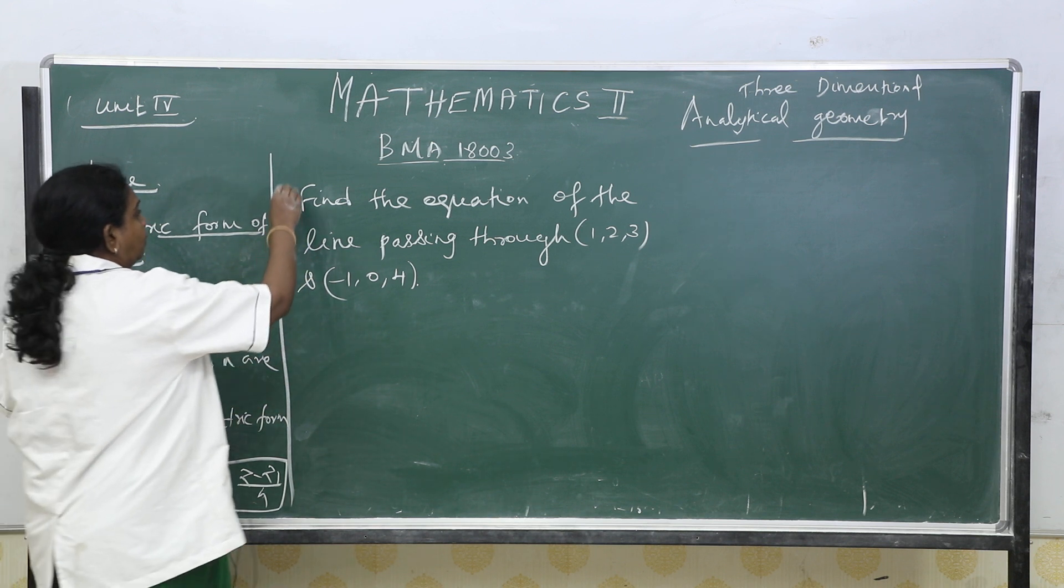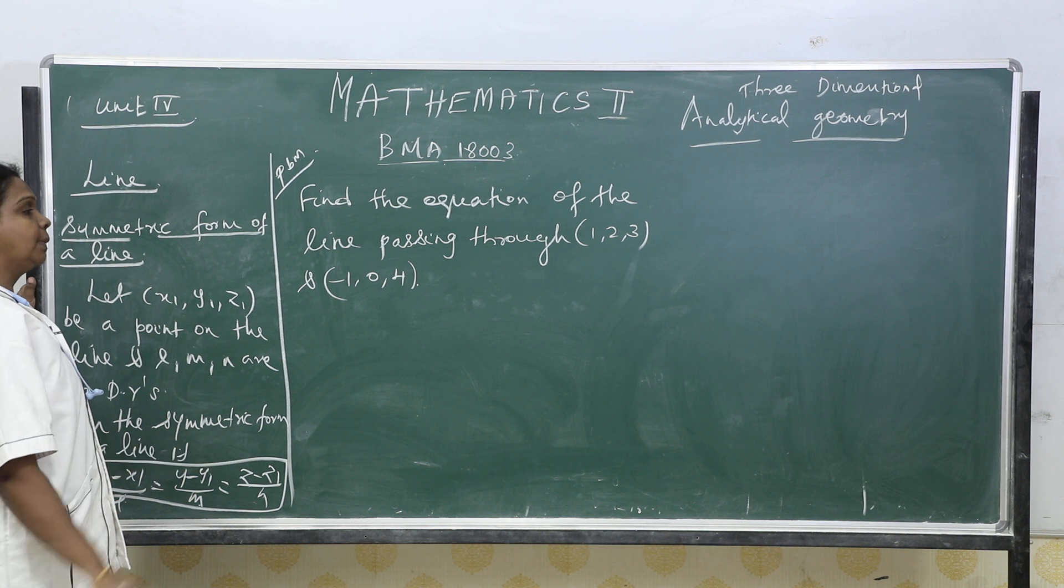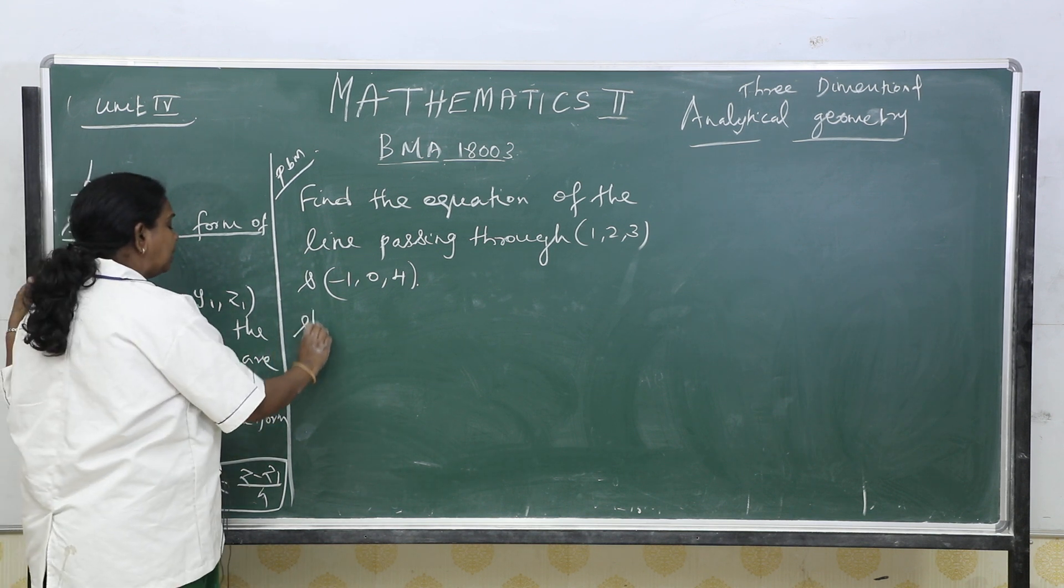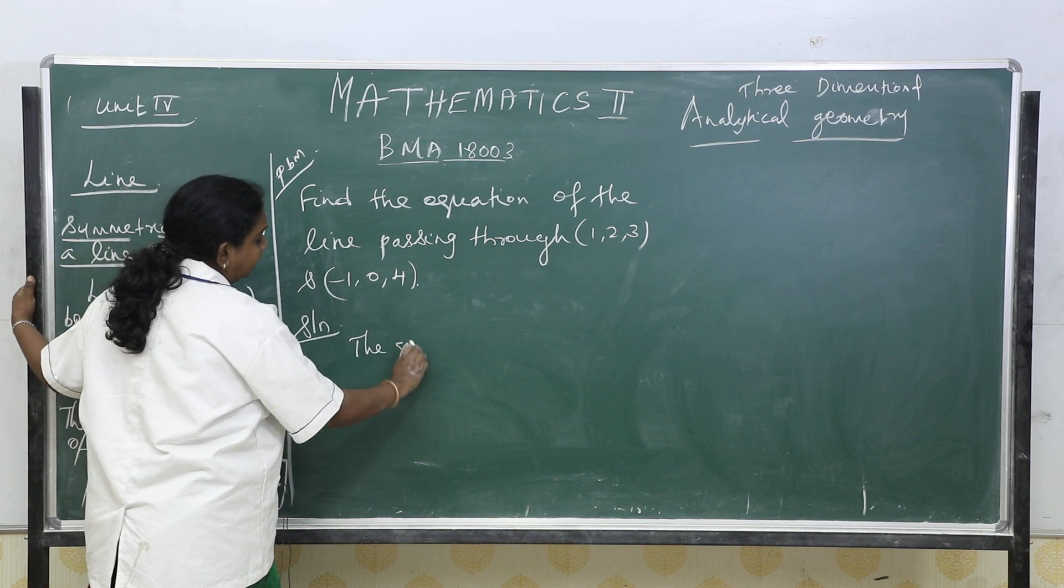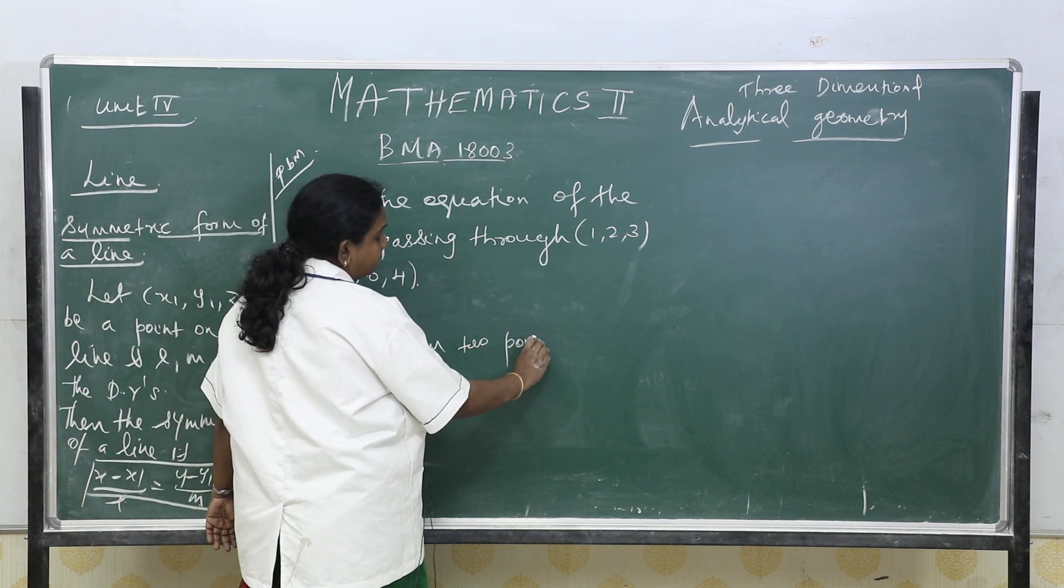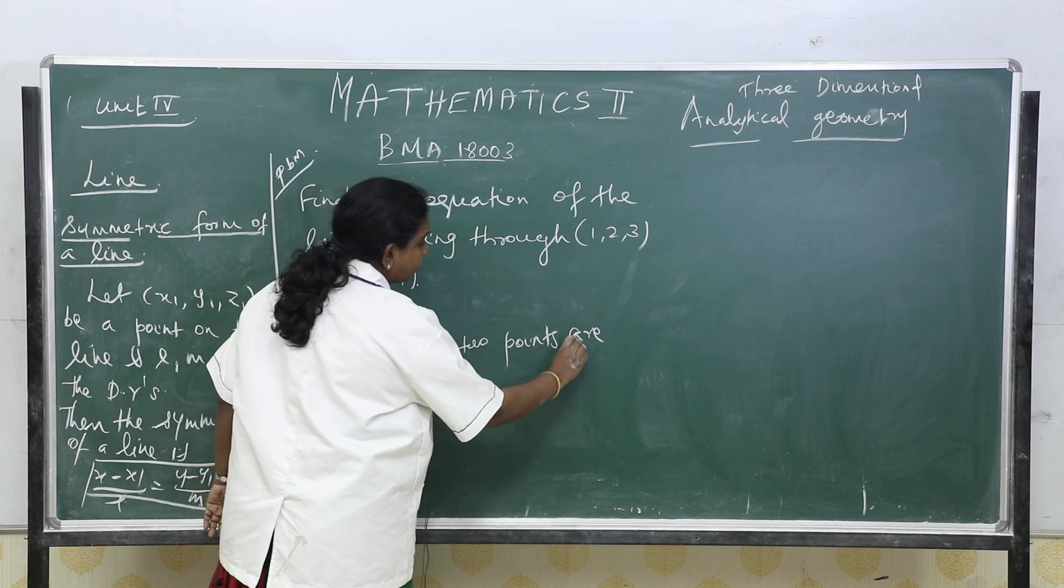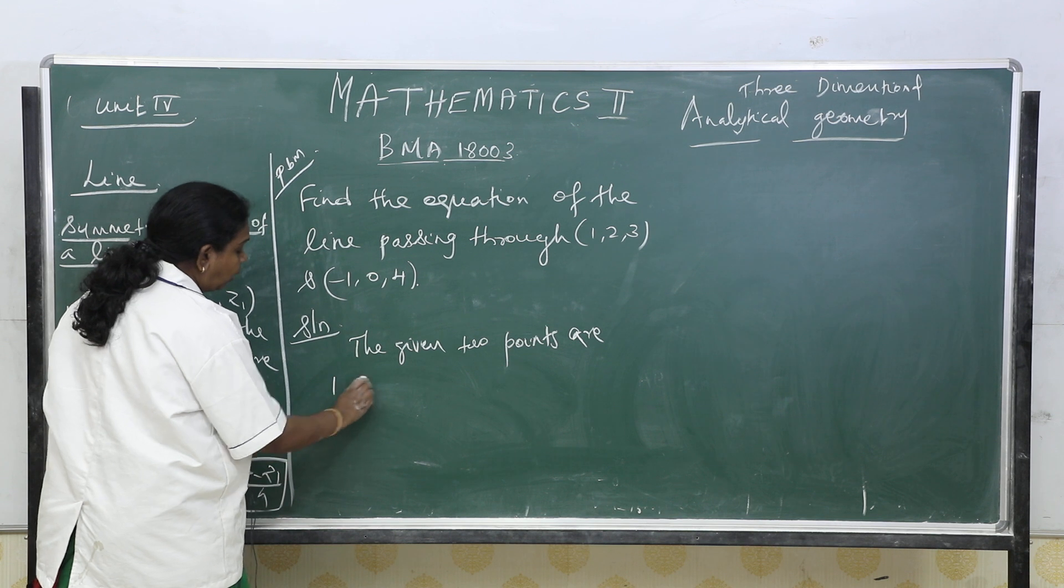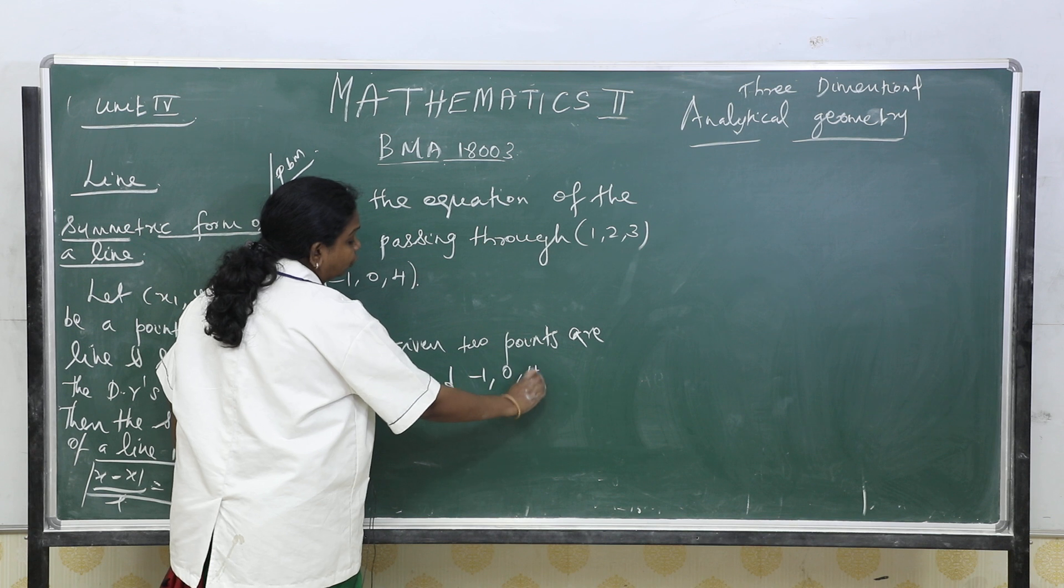Now let us see a problem. Find the equation of a line passing through (1, 2, 3). Already we know when two points are given, the given two points are (1, 2, 3) and (-1, 0, 4).